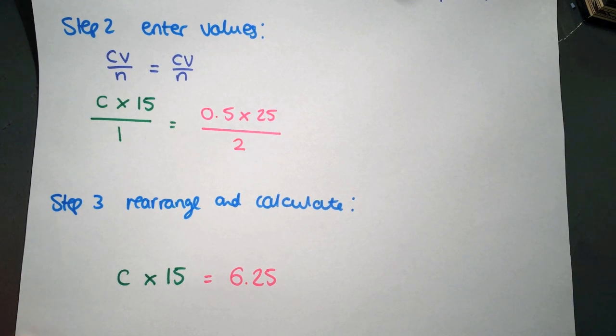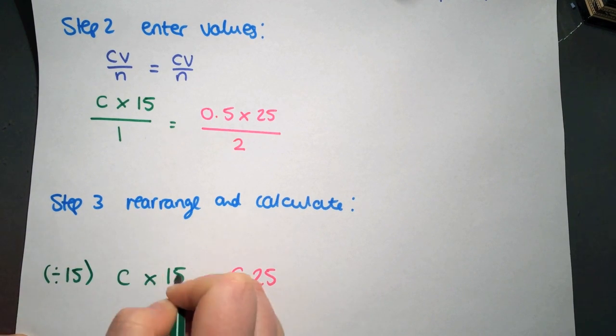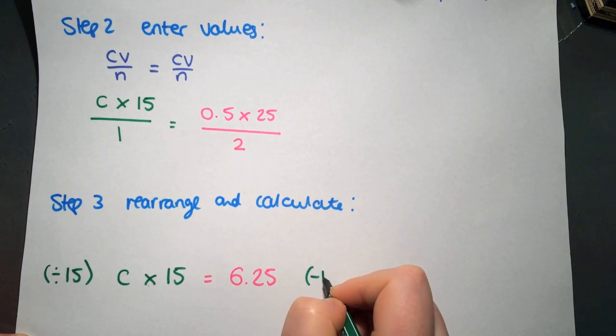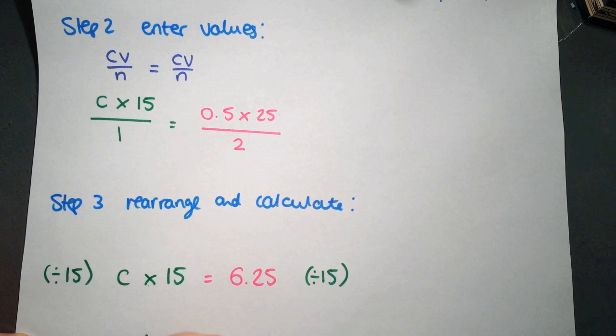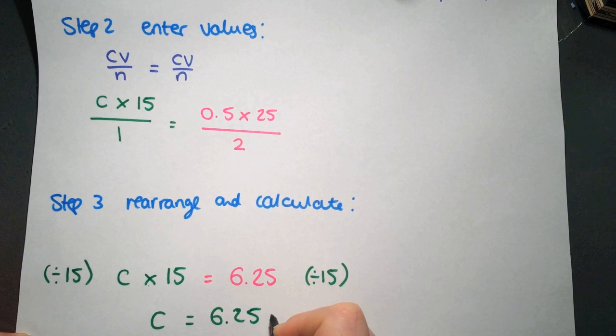To go from here we are going to divide each side by 15 and get rid of it on this side. And it allows us to carry out our calculation. So C equals 6.25 divided by 15 which equals 0.42 moles per liter.